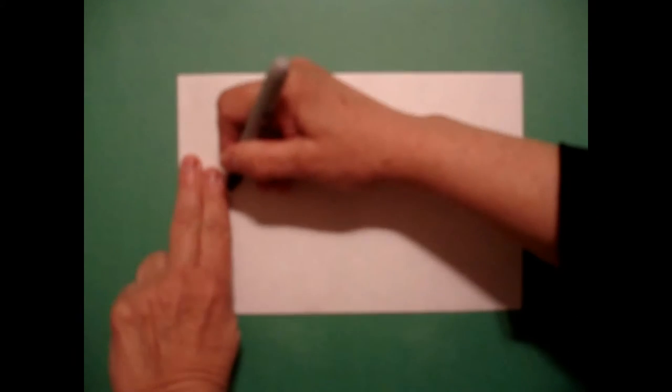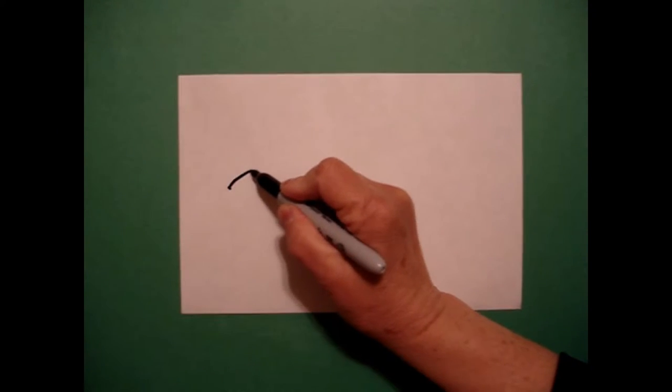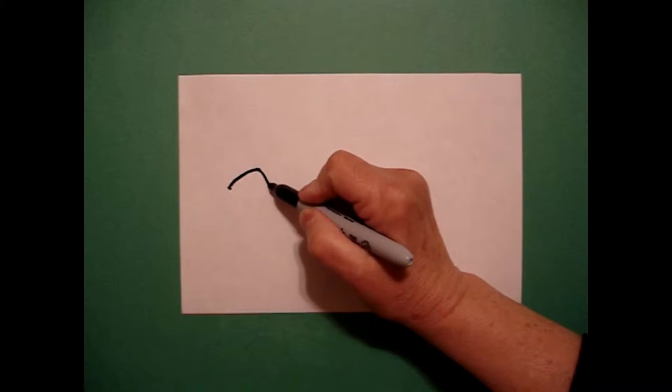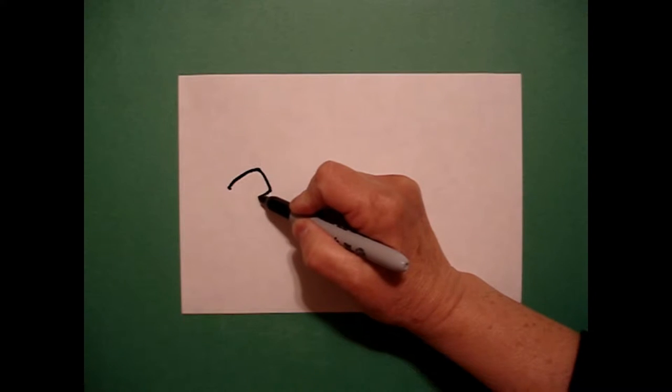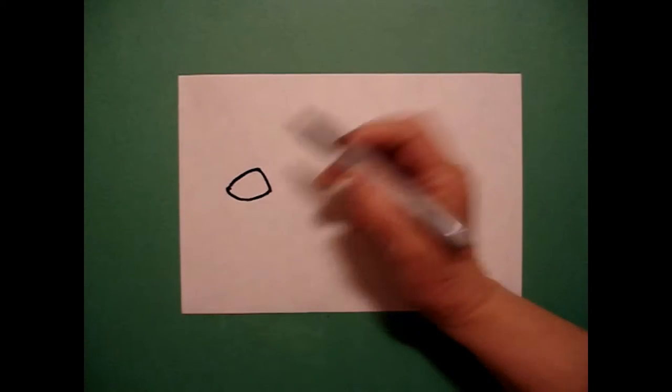I'm going to take two fingers on the left and I'm going to put a dot. And from that dot I'm going to draw a little curve line up, little curve line over, little curve line up, connect.